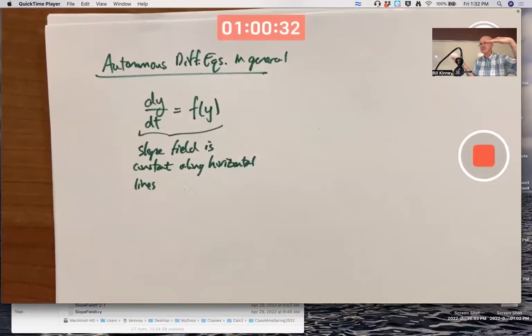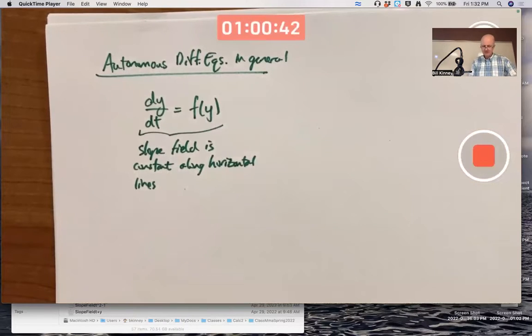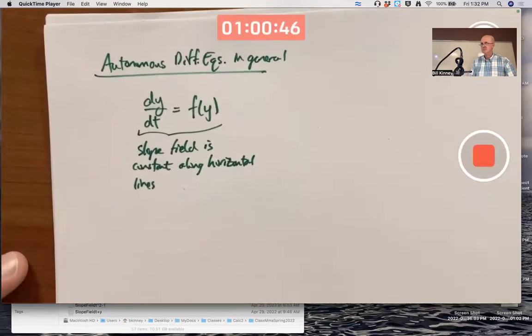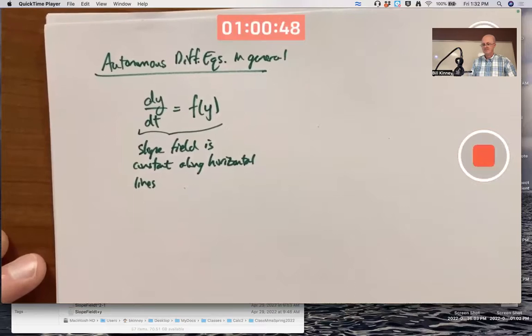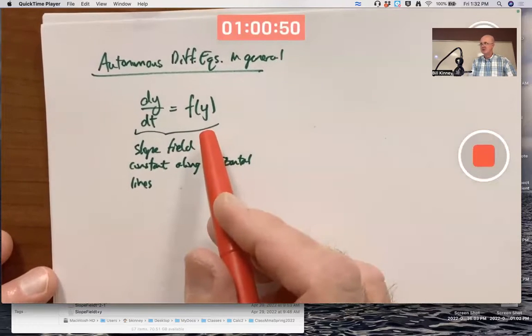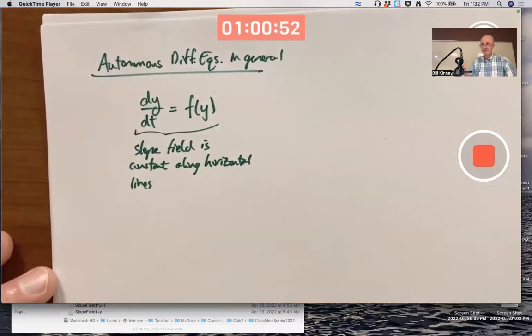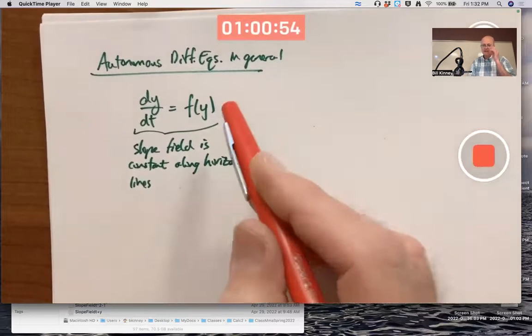Then those slope marks are going to have constant slope along the horizontal line where y is constant and it doesn't matter what t is. And in fact, because of that, there's a nice technique for drawing the slope field fairly quickly without even plugging a bunch of numbers in.